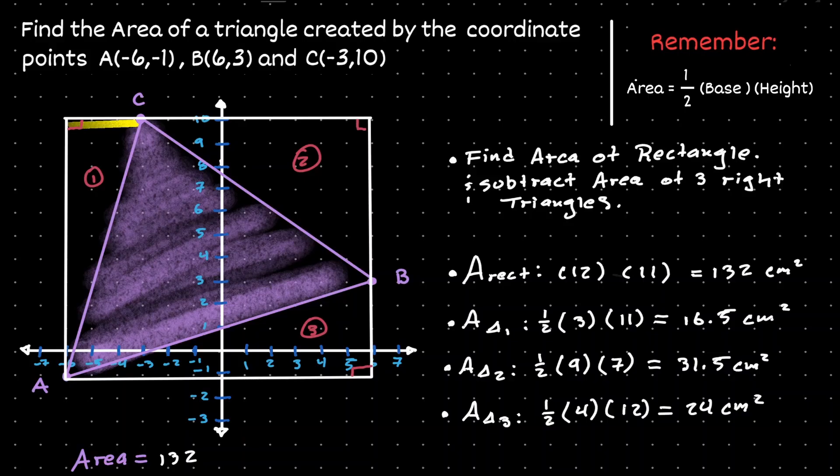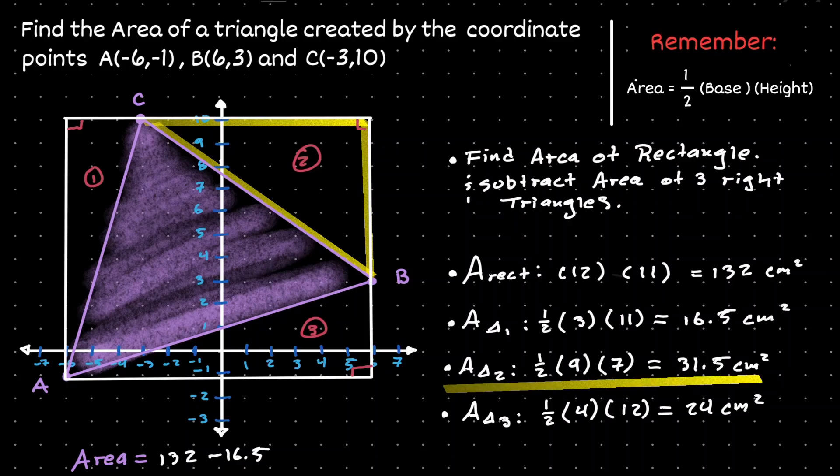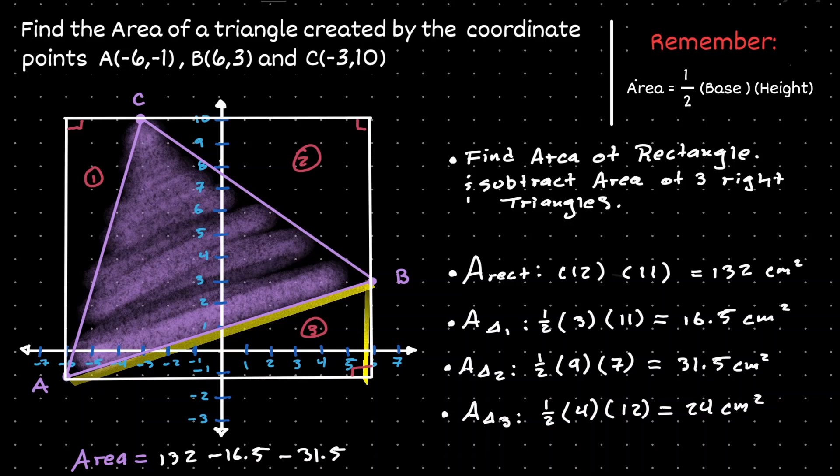And we subtract the area of the first triangle, which we found it to be 16.5. And we subtract the area of the second triangle, which was 31.5. And we subtract the area of the third triangle, which was 24. Then we will get a total of 60 centimeters squared.